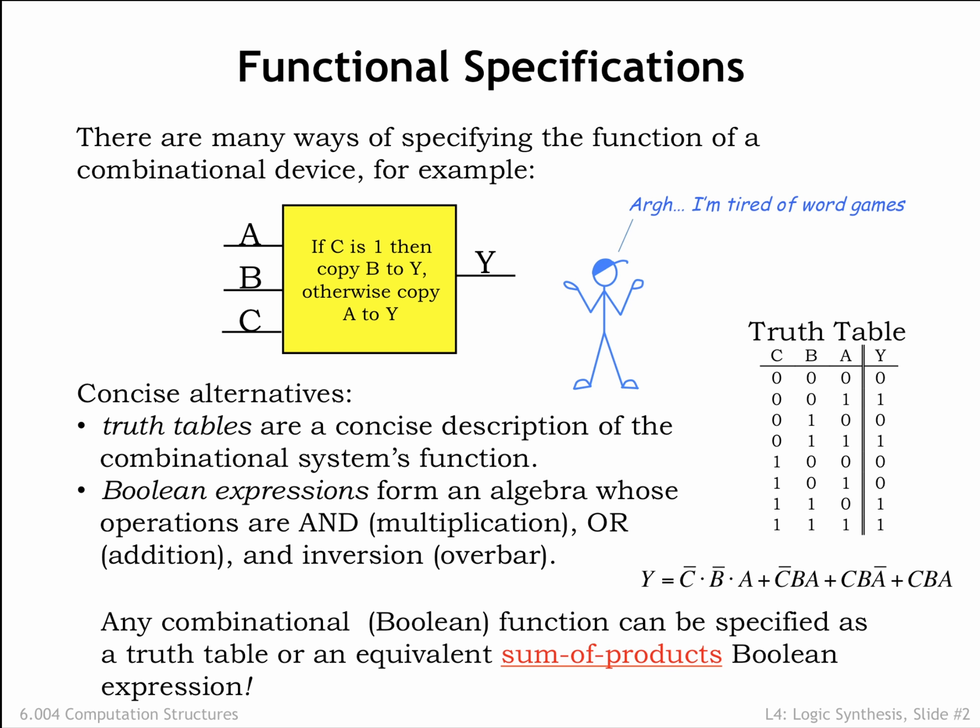Truth tables and Boolean equations are interchangeable. If we have a Boolean equation for each output, we can fill in the output columns for a row of the truth table by evaluating the Boolean equations using the particular combination of input values for that row.